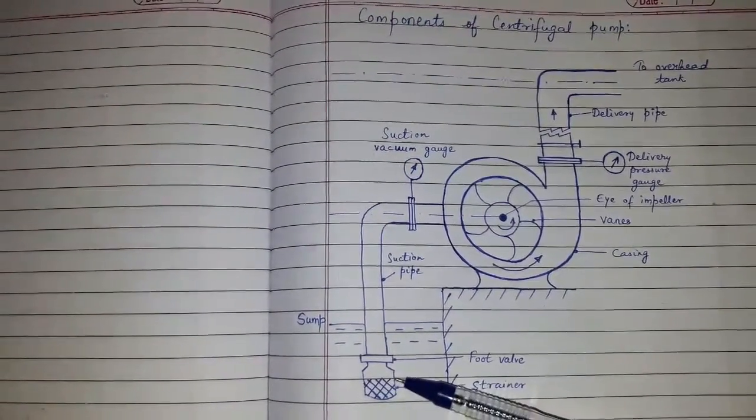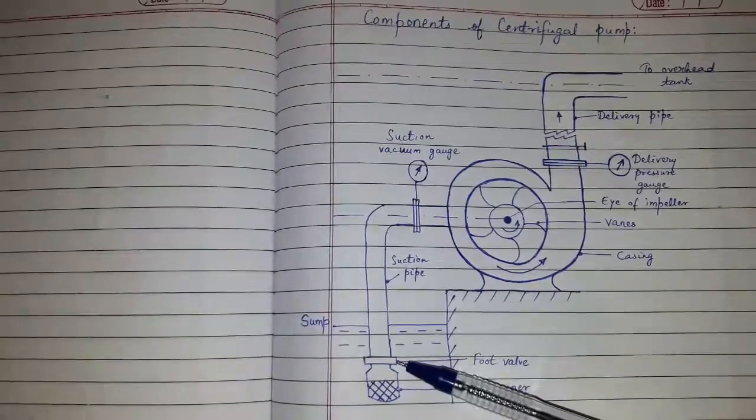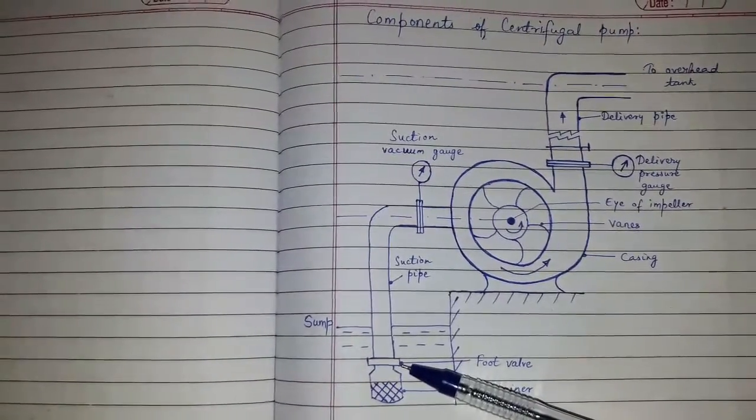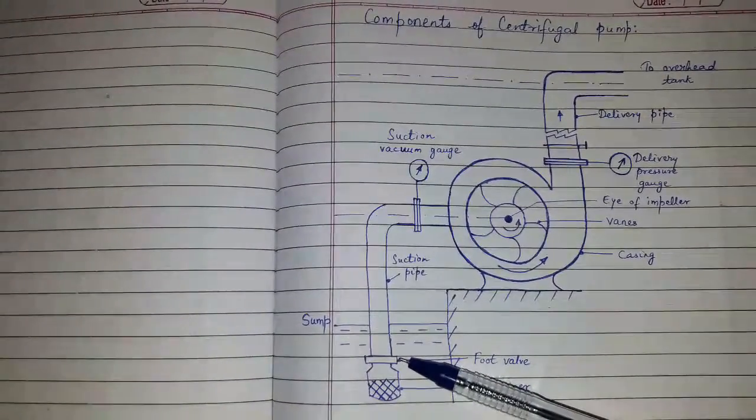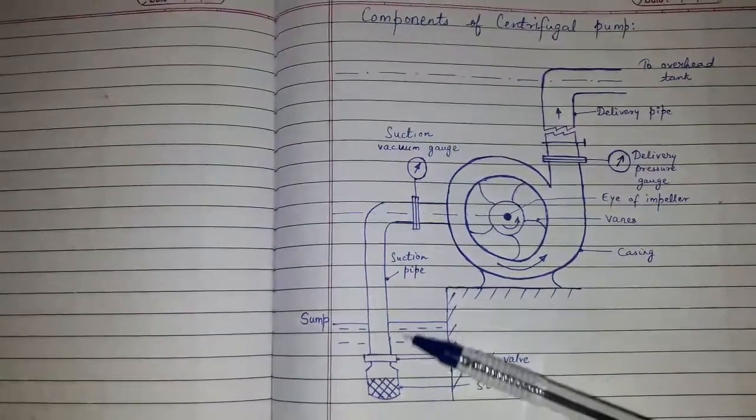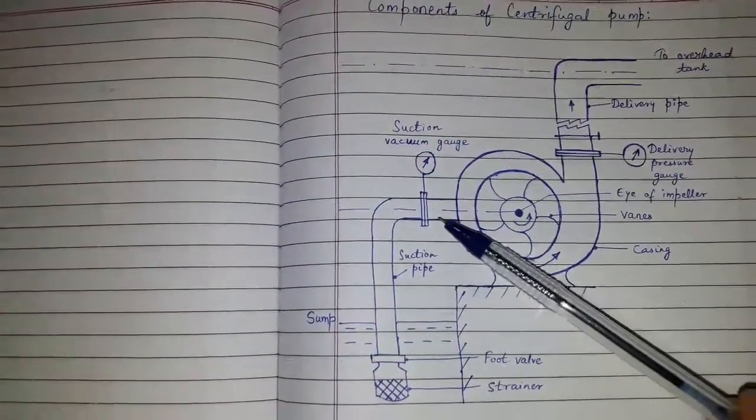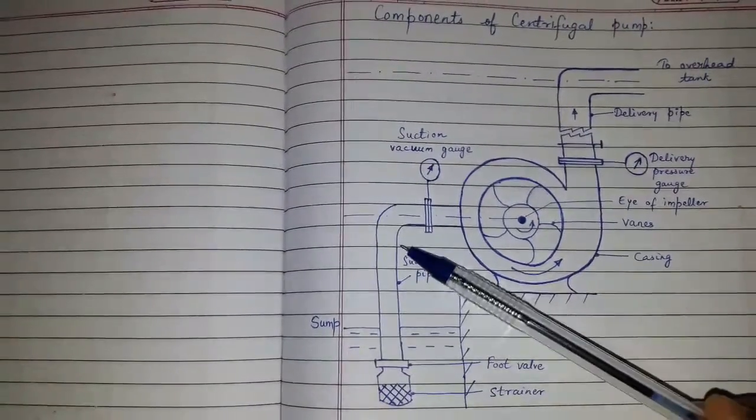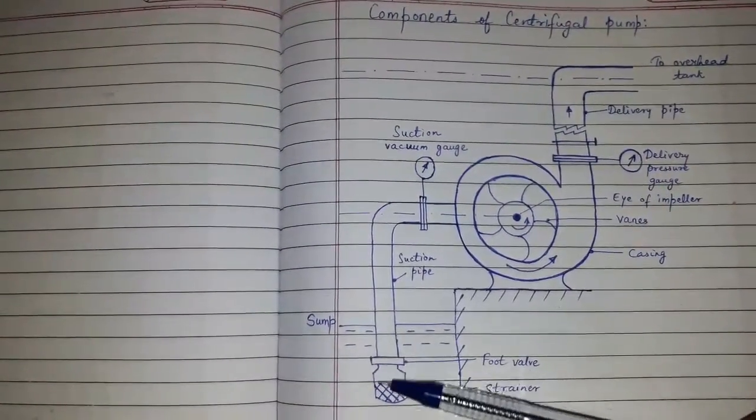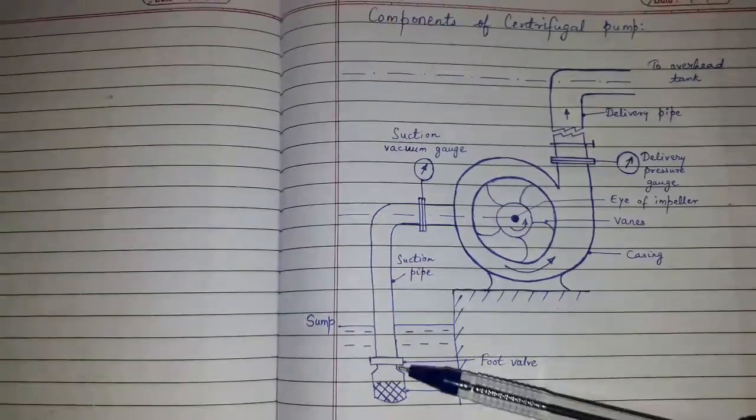Strainer prevents entry of debris. The foot valve, that is a non-return valve, does not allow the liquid to drain out of the suction pipe. Whatever liquid goes inside will not come back because of this foot valve.